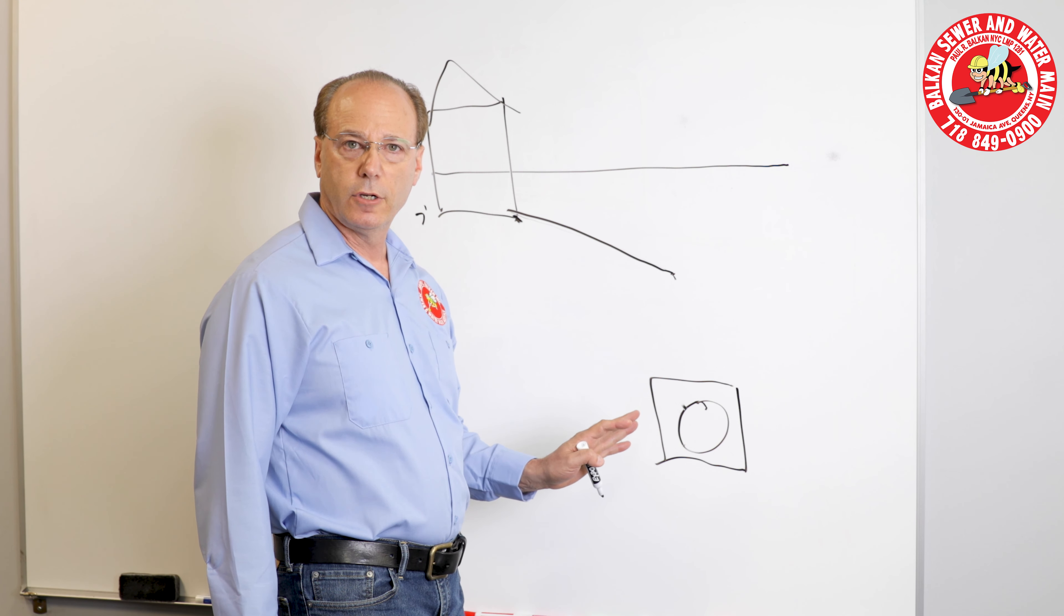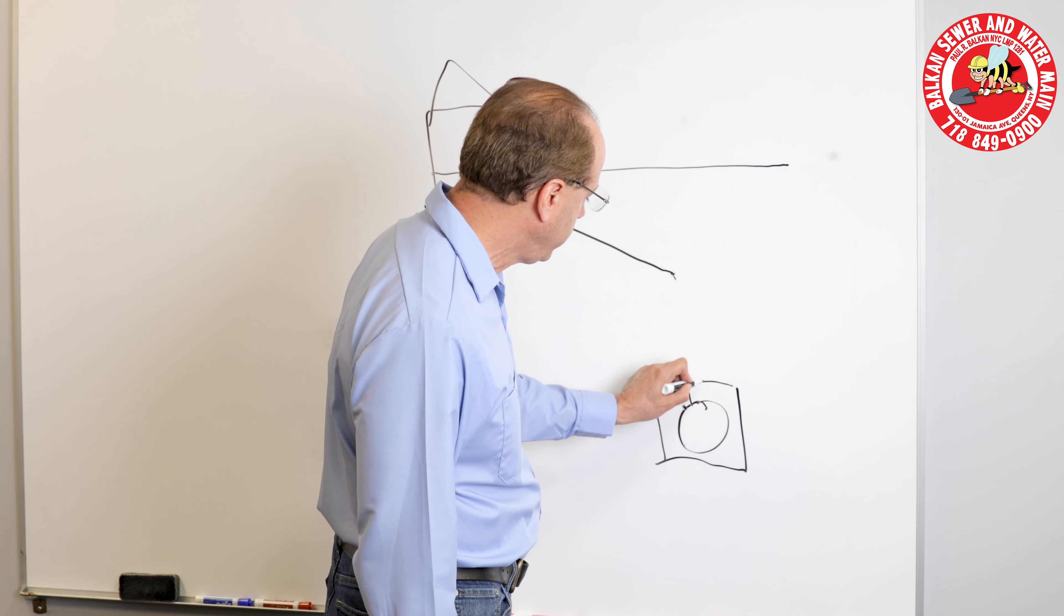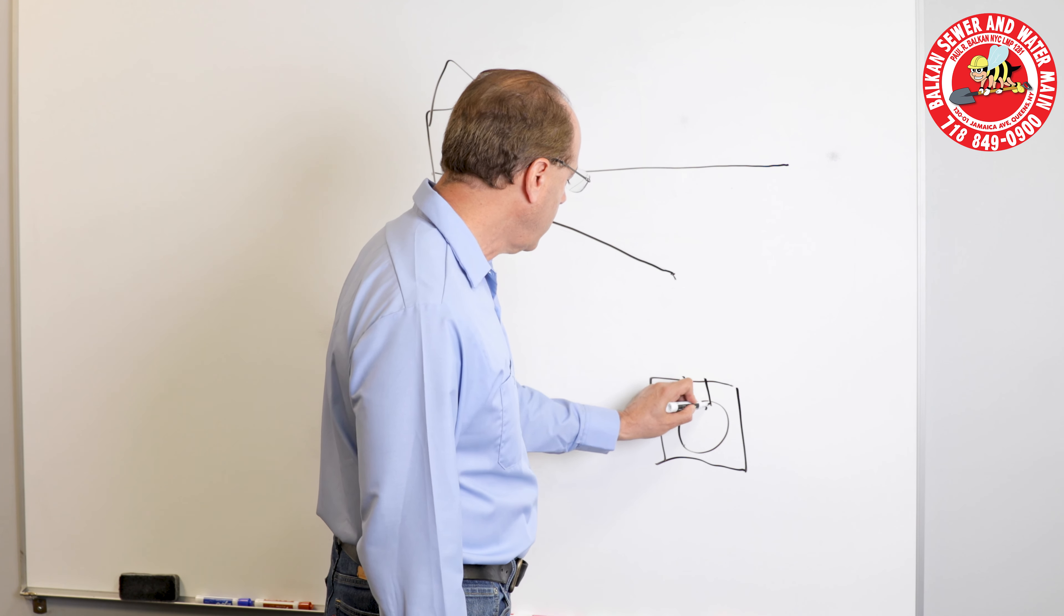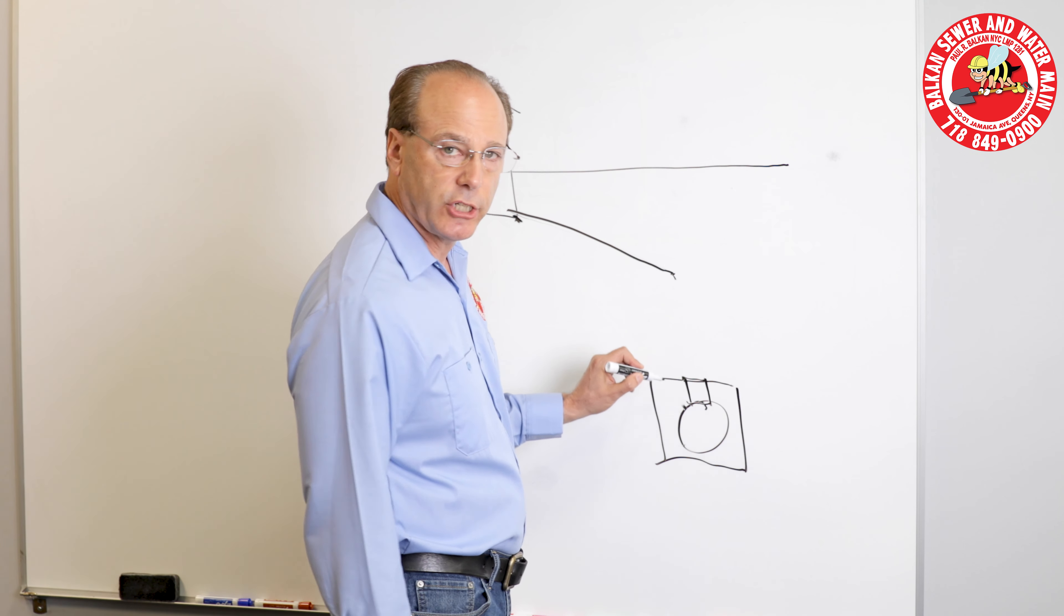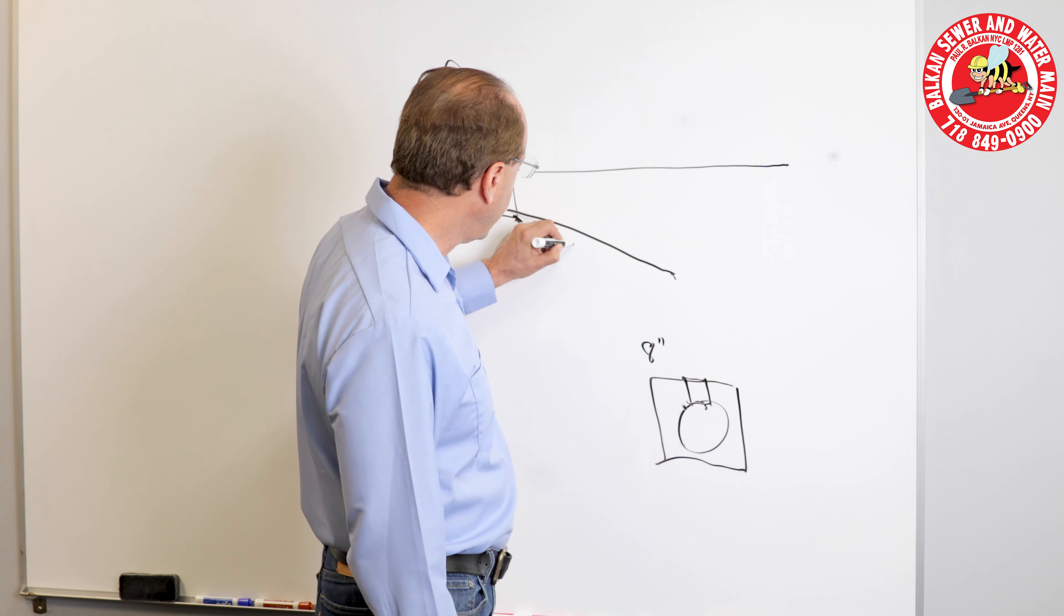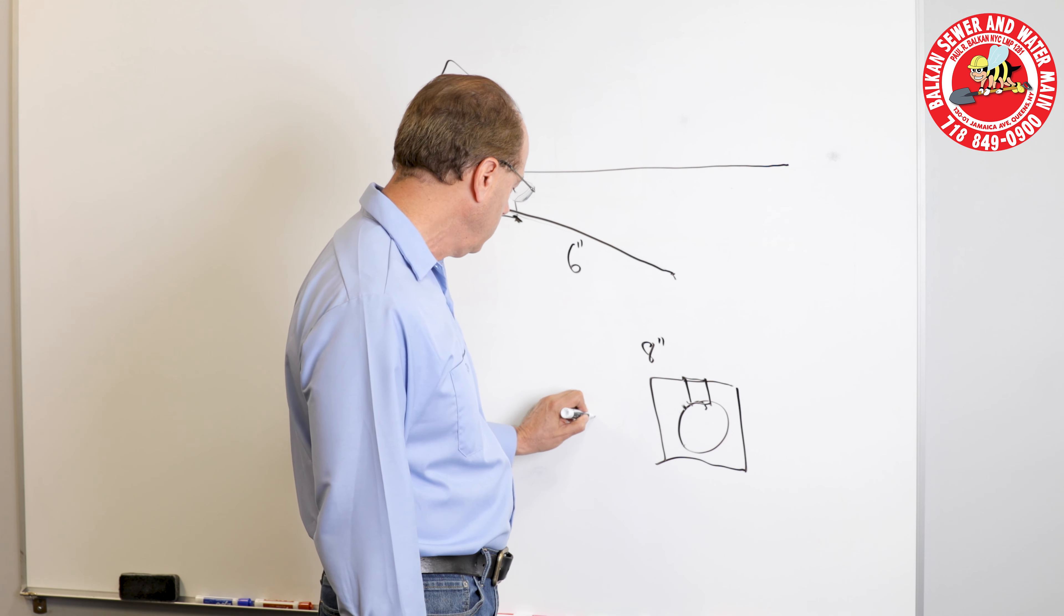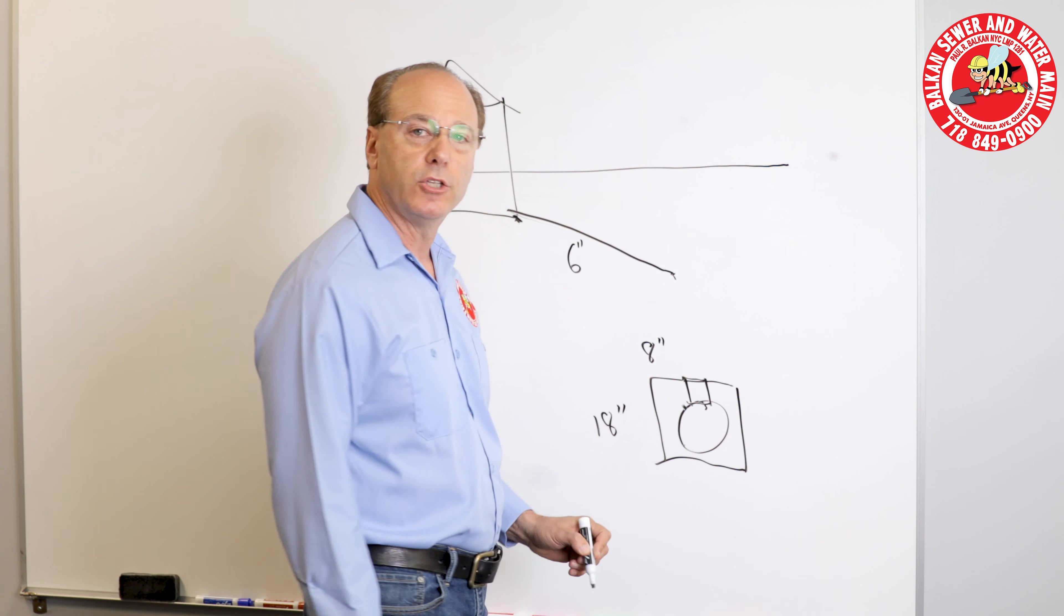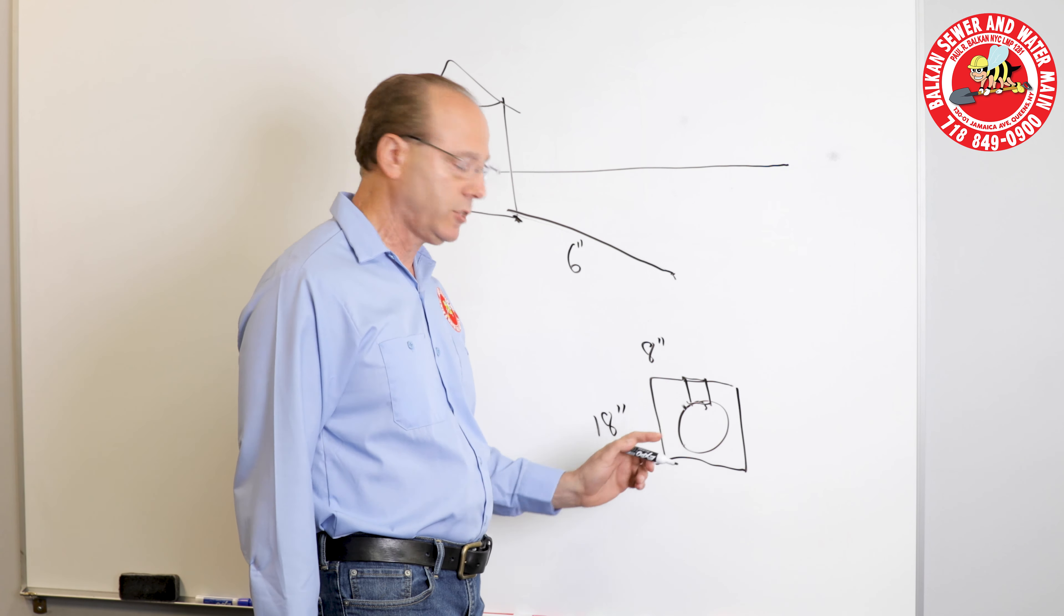After the concrete cures, a core drill penetration has to be made through the concrete and through the city sewer. Typically a riser connection itself is eight-inch pipe, the house sewer would be six-inch pipe. The city sewer could be 18-inch, could be 12-inch, could be larger than that, but the process would essentially remain the same.